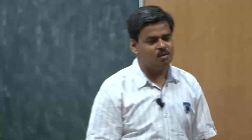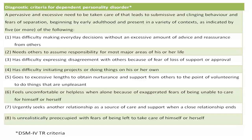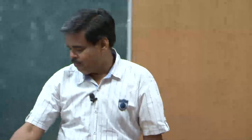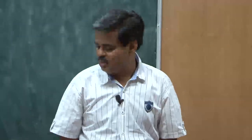This is an interesting type — dependent personality disorder, which is usually not thought about much. It is basically a pervasive and excessive need to be taken care of, which leads to submissive and clinging behavior and fear of separation. You tend to cling to others so that you are not separated from people who ensure you are taken care of. This was referred to when we discussed neurotic nucleus and neurotic paradox. Out of 8 symptoms, five should be present for classification as dependent personality disorder.